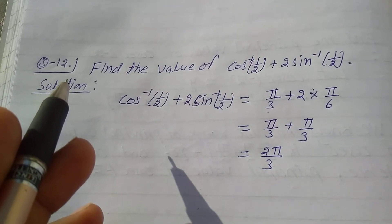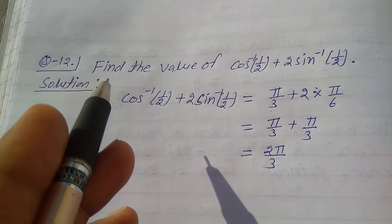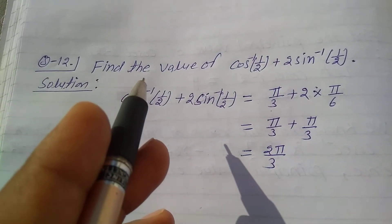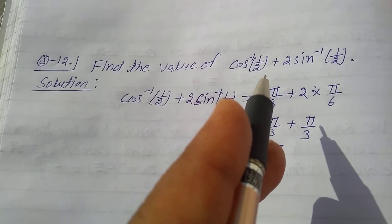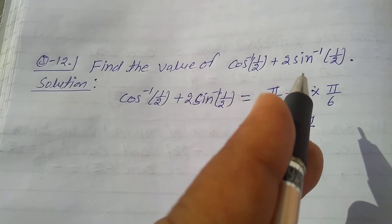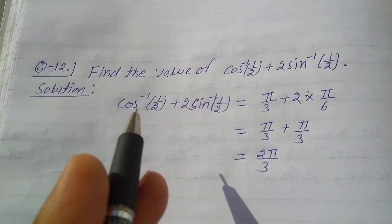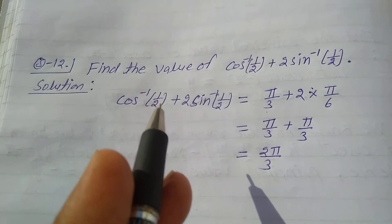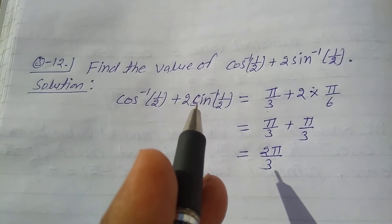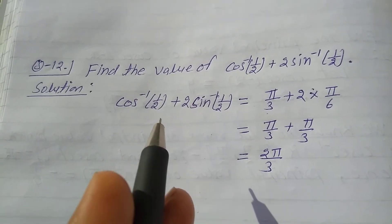Explain question number 12, exercise 2.1, class 12: find the value of cos inverse 1 by 2 plus 2 sin inverse 1 by 2. Solution start: take cos inverse 1 by 2 plus 2 sin inverse 1 by 2.